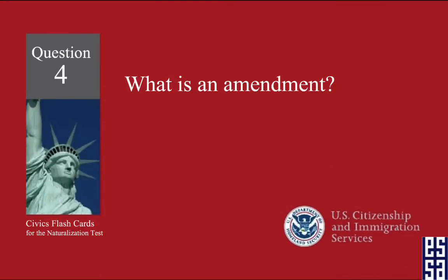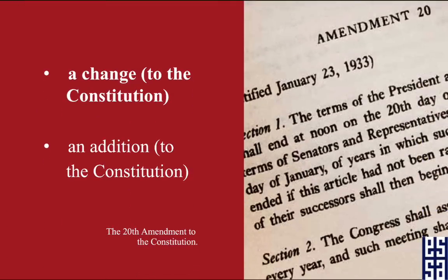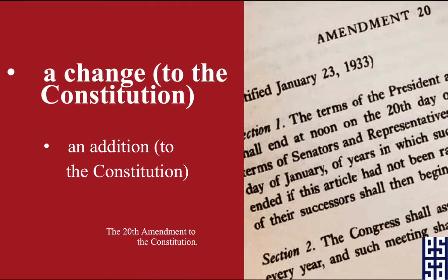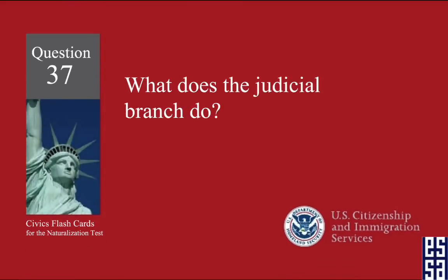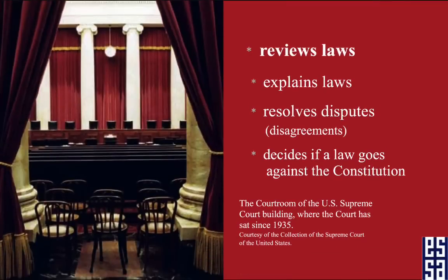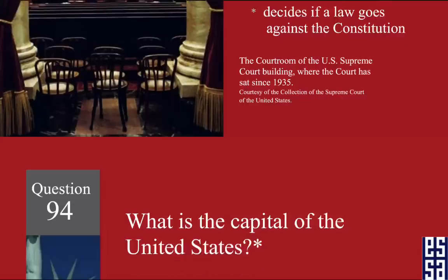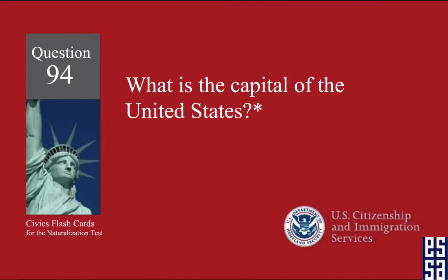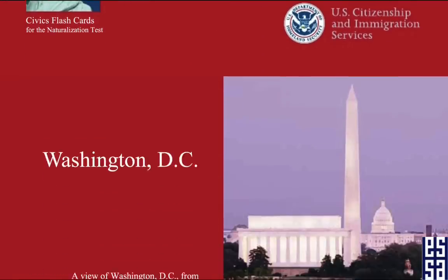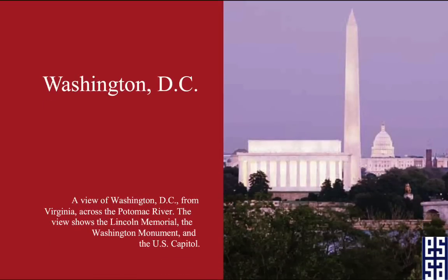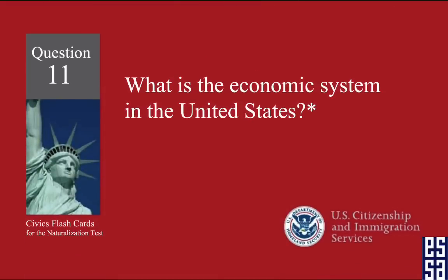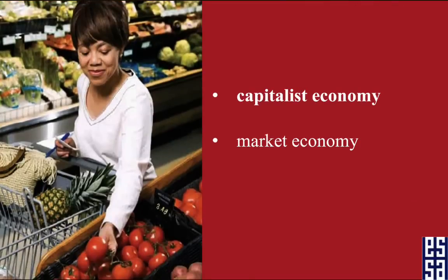What is an amendment? A change to the Constitution. What does the judicial branch do? Reviews laws. What is the capital of the United States? Washington, D.C. What is the economic system in the United States? A capitalist economy.